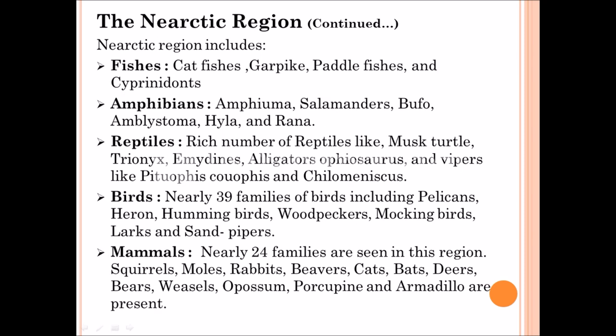The Nearctic region contains fauna species like catfishes, paddle fishes, and Cyprinodonts among fish. Amphibians include Bufo, Hyla, Rana, and Salamander. Birds include 39 families including pelicans, heron, hummingbird, and woodpecker. Mammals — 29 families — are also found, like squirrels, moles, cats, bats, bears, and more.